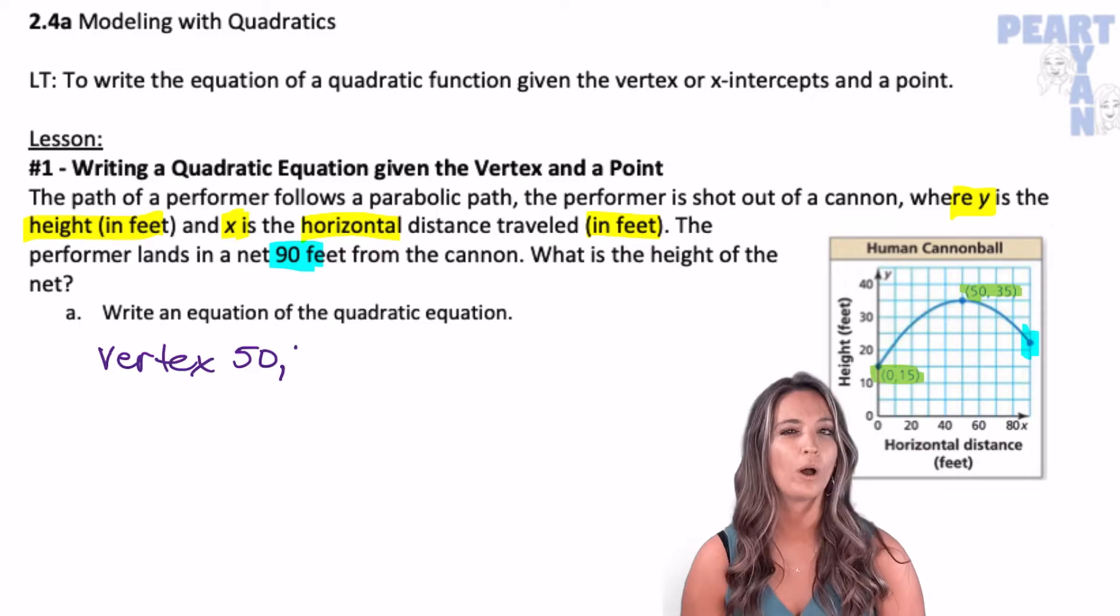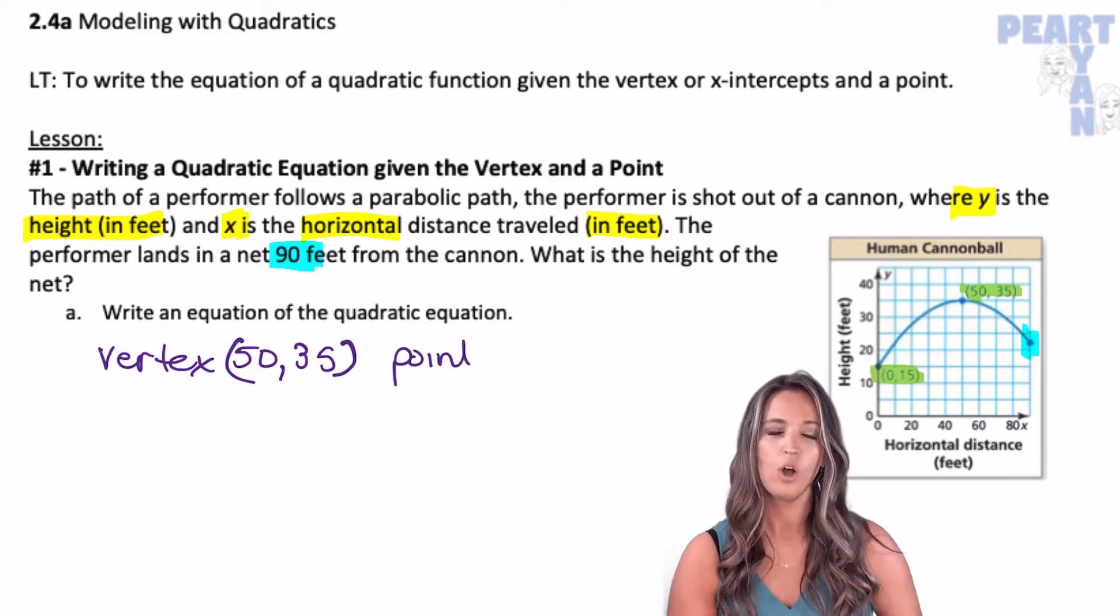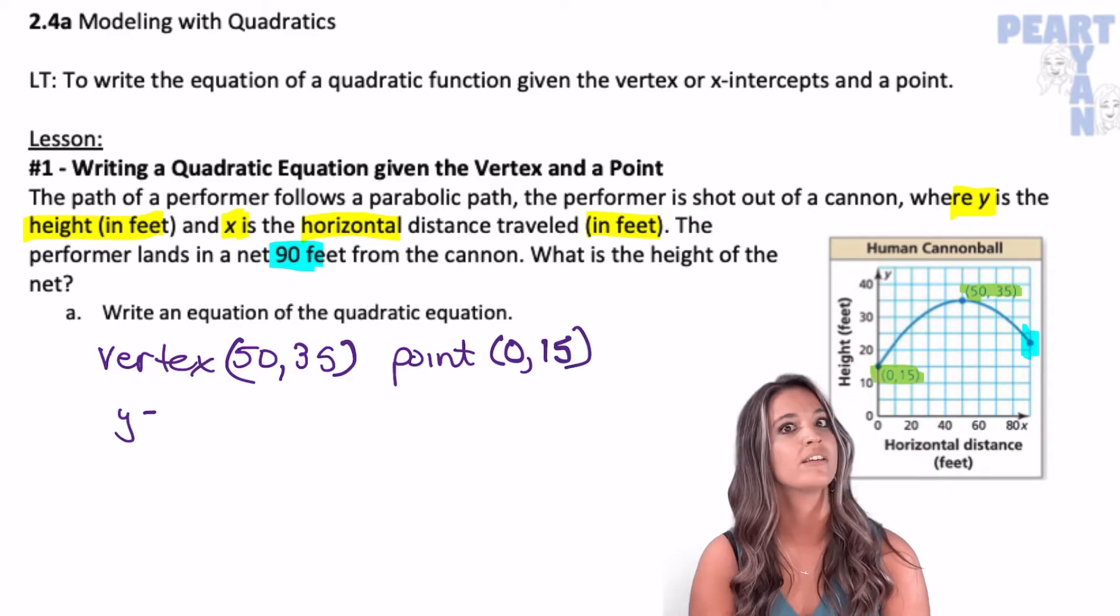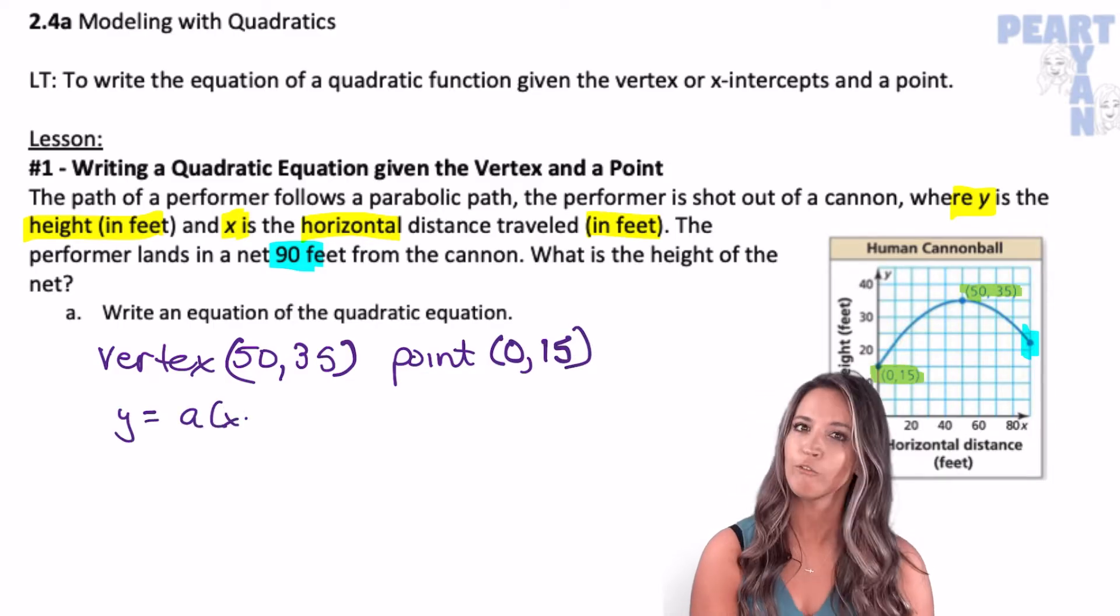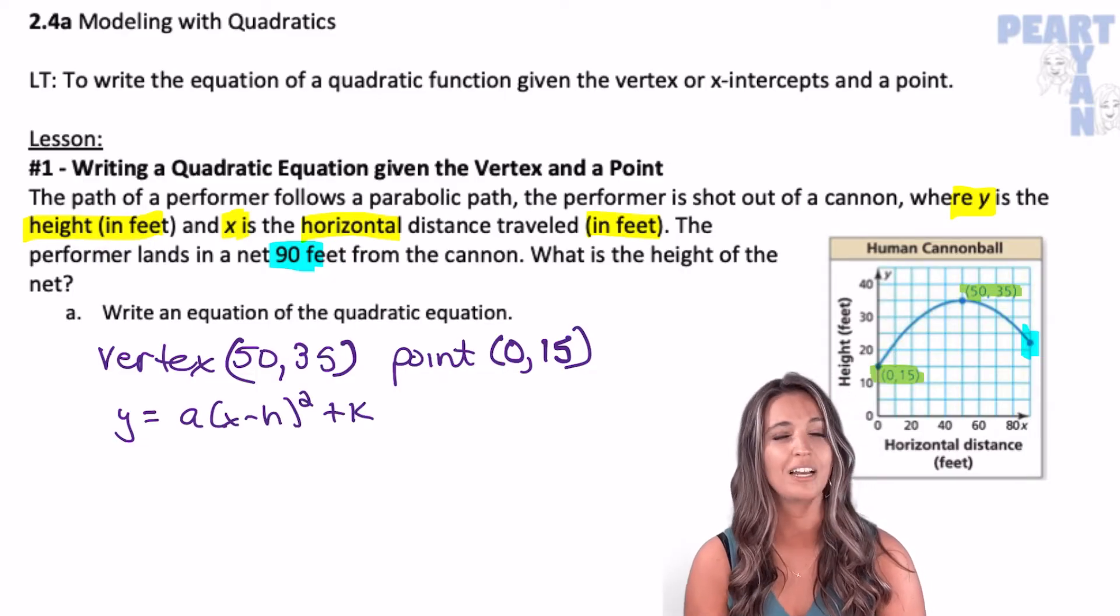Let's start by trying to write a quadratic equation that we could use to model this graph. If I know the vertex, writing a quadratic in vertex form will be the simplest. The general form for vertex form is Y = a(x - h)² + k.